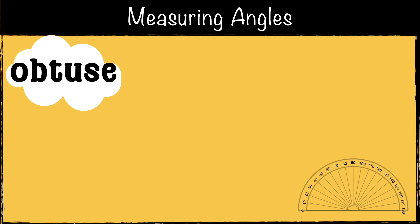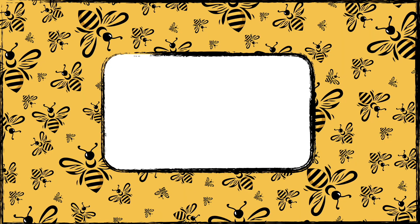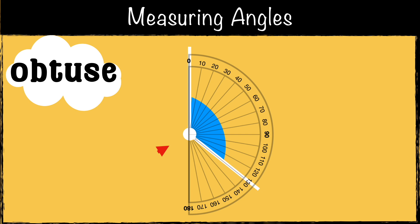Now let's measure an obtuse angle. We know it's an obtuse angle because it's a wide angle that's more than 90 degrees. But what is the exact angle? Place the center point of the protractor exactly where the two lines meet. Make sure the zero line on the protractor sits along one of the lines. Now we can read the number where the second line crosses the scale. So this angle is 130 degrees.